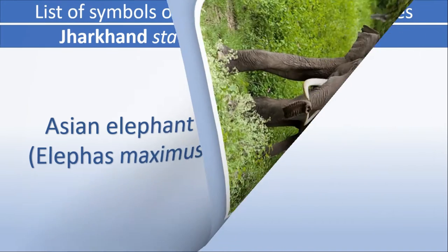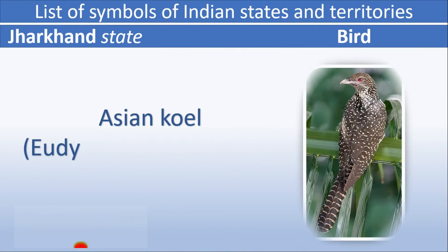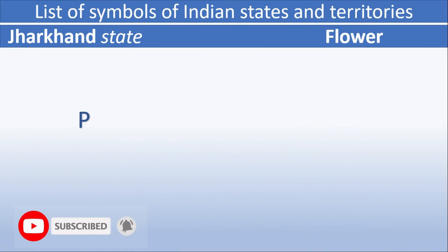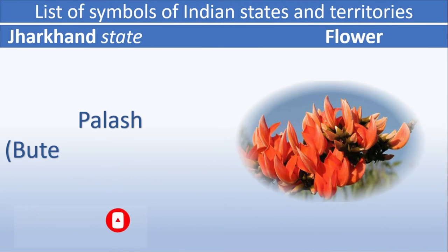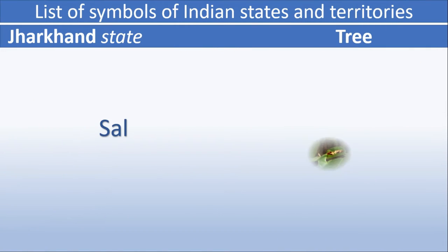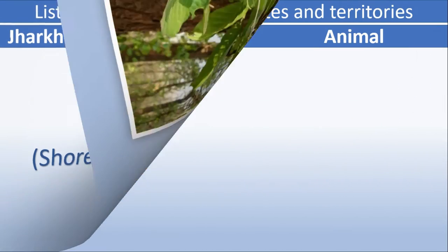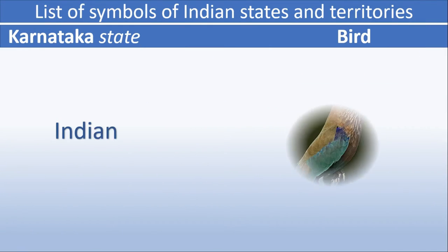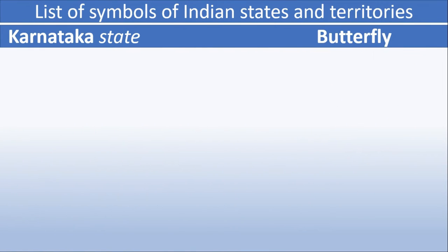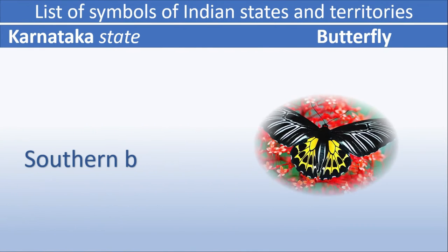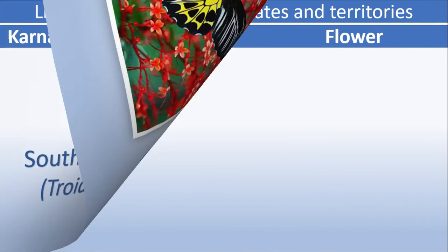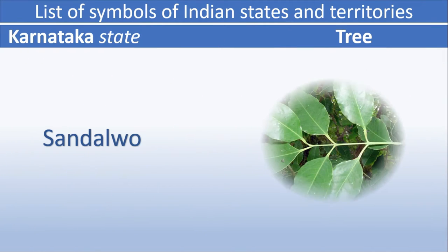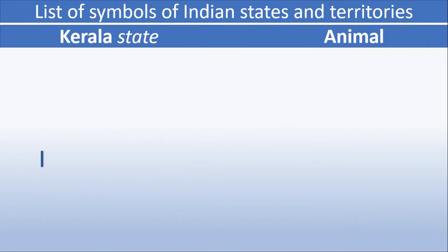Jharkhand animal: Asiatic Elephant. Jharkhand bird: Asiatic Elephant (Asian Elephant). Jharkhand flower: Palash. Jharkhand tree: Sal. Karnataka animal: Asiatic Elephant. Karnataka bird: Indian Roller. Karnataka butterfly: Southern Birdwing. Karnataka flower: Lotus. Karnataka tree: Sandalwood.